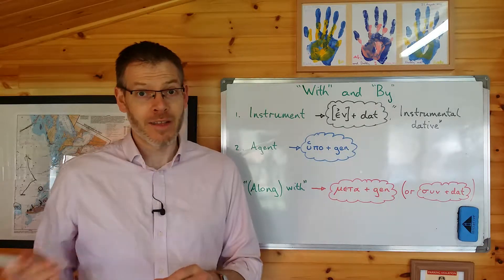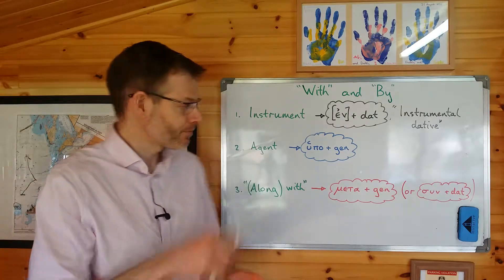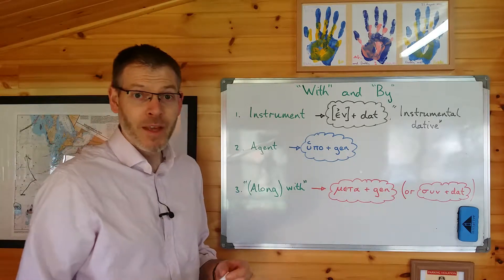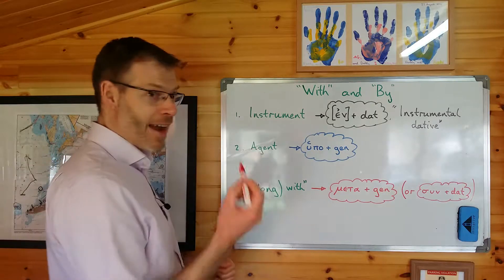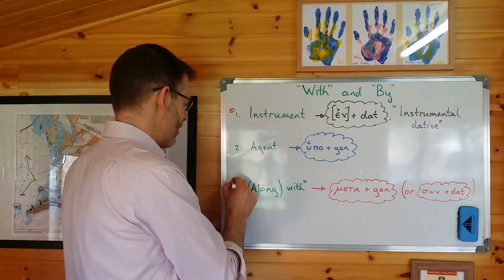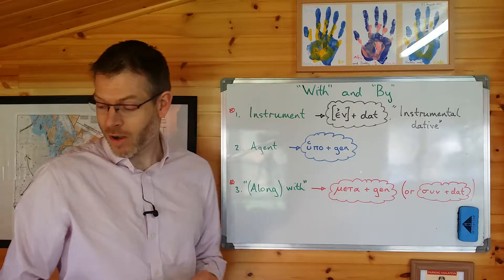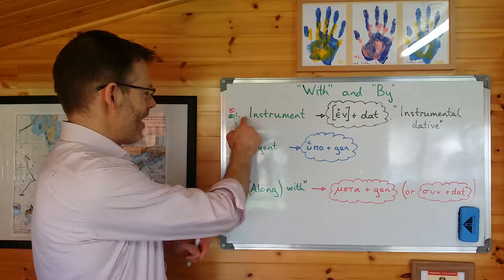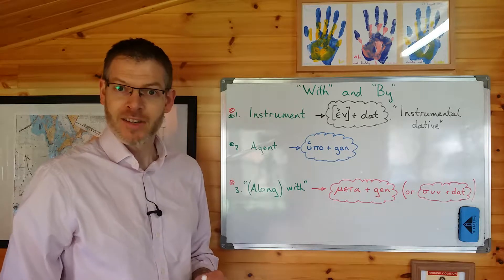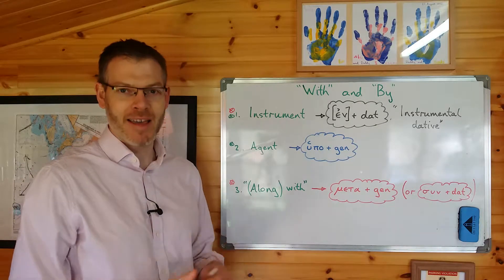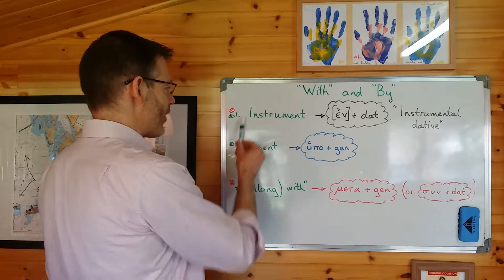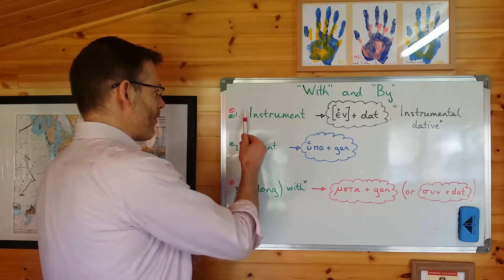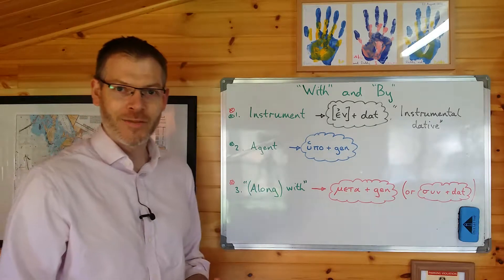So for example, the three instances that Duff has got here, the instrument, the agent, and the phrase which you might write in English along with, well, the word with in English can be used here and here. While the word by in English can be used here and here. So you see the confusion. People use the word by in English and then they automatically plump for one or the other of these without thinking which one it actually should be. Or they use the word with in English and they automatically plump for one or the other of these without thinking which of the two it should be.